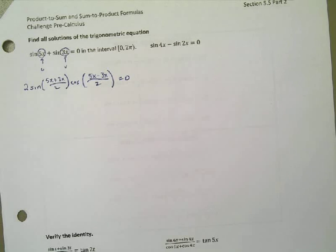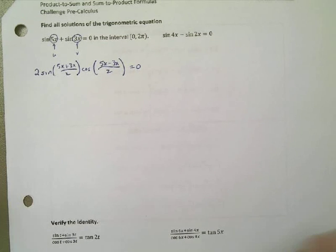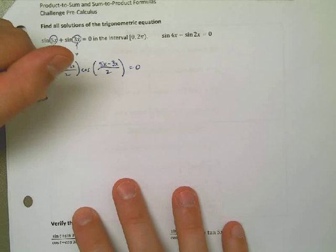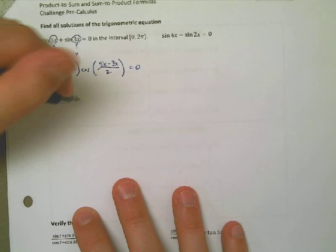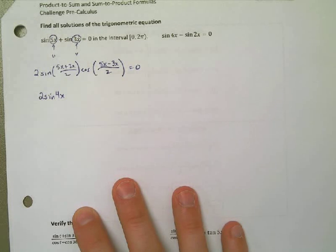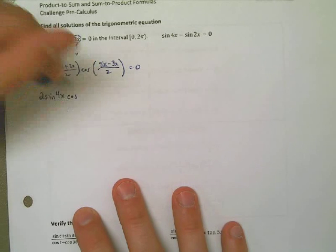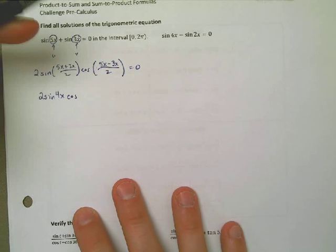And that is equal to 0. That comes from the sum to product formulas. So now I need to simplify the stuff inside the parentheses. That's 2 times the sine of 8x/2, which is just 4x, times the cosine of 2x/2, which is just x, and that's equal to 0.